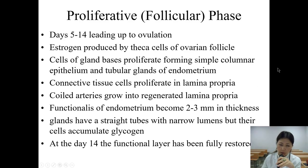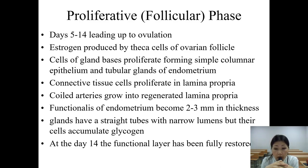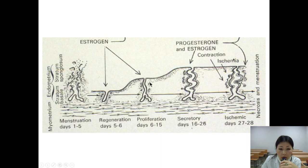During the proliferative or follicular phase, days 5 to 14, leading up to ovulation, estrogen produced by theca cells of ovarian follicles causes cells of gland bases to proliferate, forming simple columnar epithelium and tubular glands of the endometrium. Connective tissue cells proliferate in the lamina propria, and coiled arteries grow into the regenerated lamina propria. The functionalis of the endometrium becomes 2 to 3 millimeters in thickness, and glands have straight tubes with narrow lumens. Their cells accumulate glycogen. By day 14 the functional layer is fully restored, as seen on the diagram showing the proliferating endometrial gland.